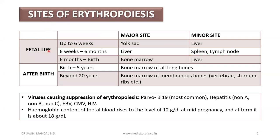In fetal life, up to six weeks the major site is the yolk sac. From six weeks to six months it becomes the liver, and from six months onwards till birth it is the bone marrow. The minor site: up to six weeks it is the liver; six weeks to six months it is the spleen or lymph node; and from six months until birth it is the liver.